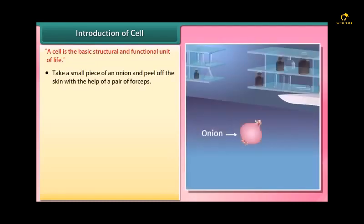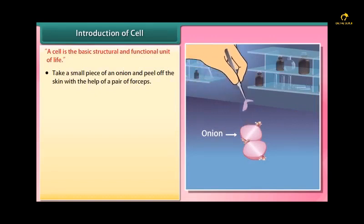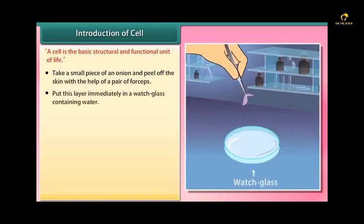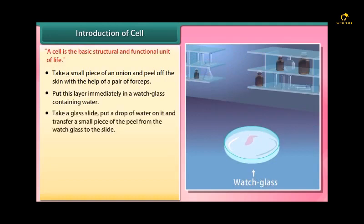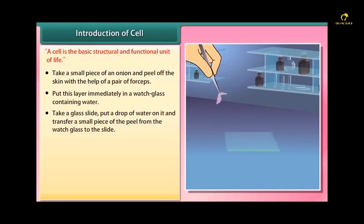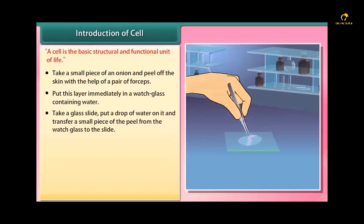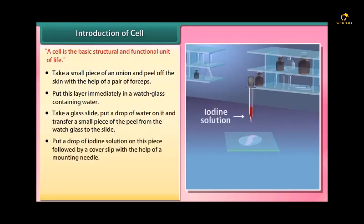Experiment: Take a small piece of an onion and peel off the skin with the help of a pair of forceps. Put this layer immediately in a watch glass containing water. Take a glass slide, put a drop of water on it and transfer a small piece of the peel from the watch glass to the slide. Put a drop of iodine solution on this piece.